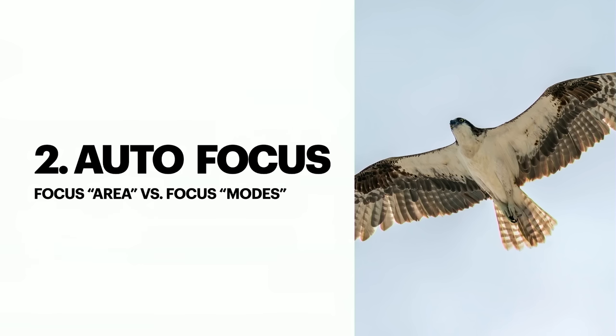Auto ISO is game-changingly huge. If you've never used it, your camera has it — go look it up in your manual and turn it on. What it did is it took manual mode and made it automatic: no matter what setting I change, I still get a good exposure.